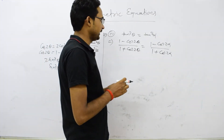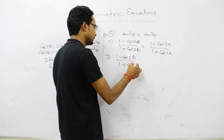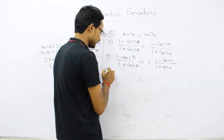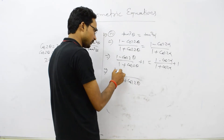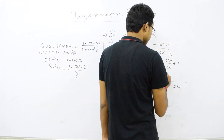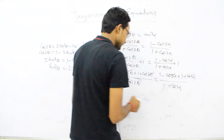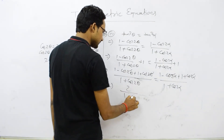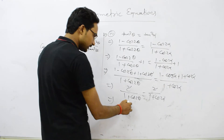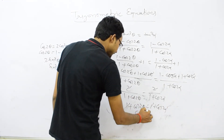Now we simplify. Adding 1 to both sides: (1 − cos 2θ)/(1 + cos 2θ) + 1 = (1 − cos 2α)/(1 + cos 2α) + 1. Taking LCM on each side: (1 − cos 2θ + 1 + cos 2θ)/(1 + cos 2θ) = (1 − cos 2α + 1 + cos 2α)/(1 + cos 2α). The cosine terms cancel, giving 2/(1 + cos 2θ) = 2/(1 + cos 2α). Taking reciprocals and cancelling the 2s: 1 + cos 2θ = 1 + cos 2α, so cos 2θ = cos 2α.